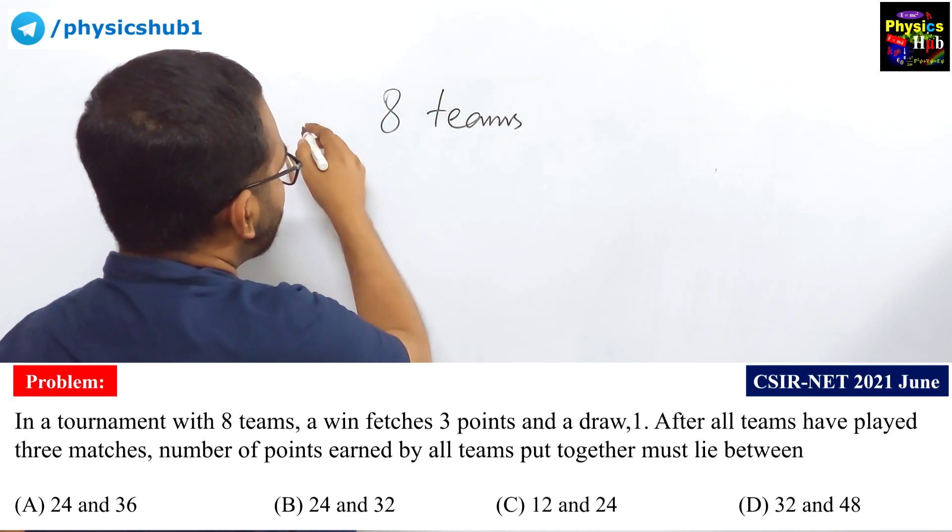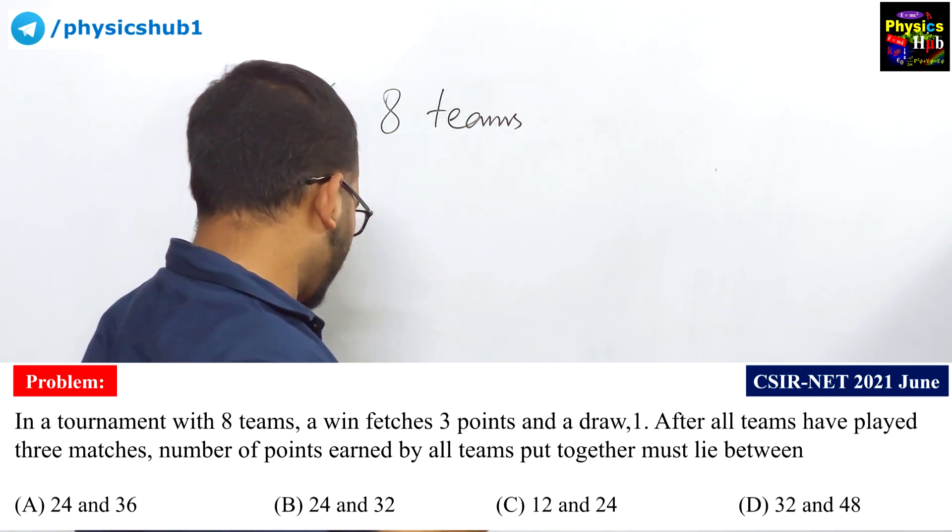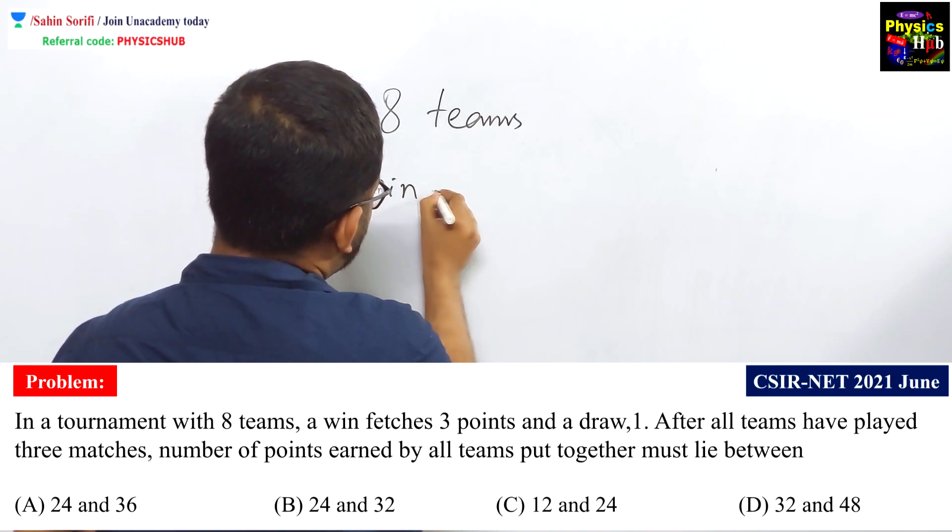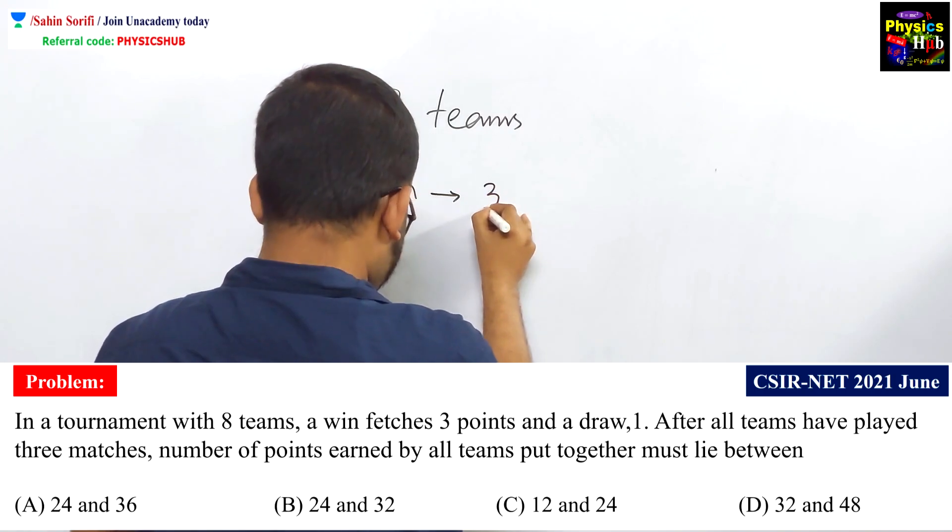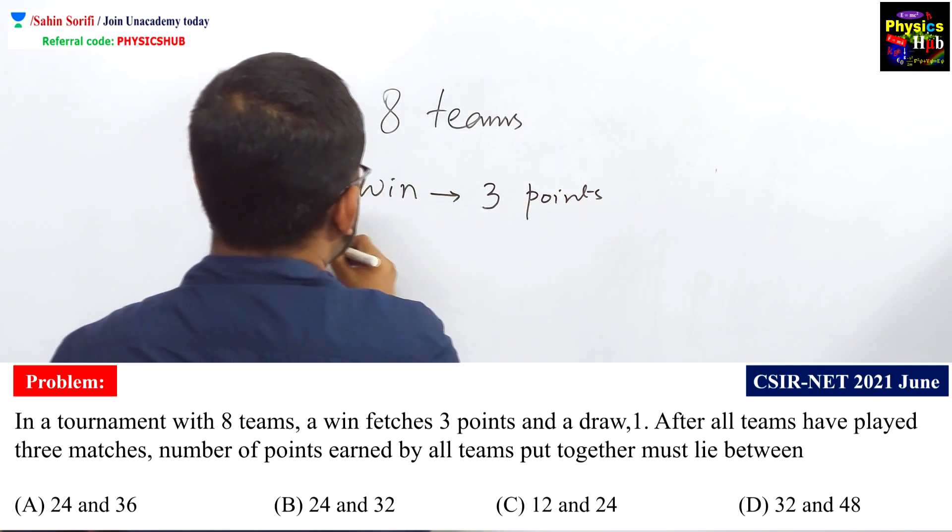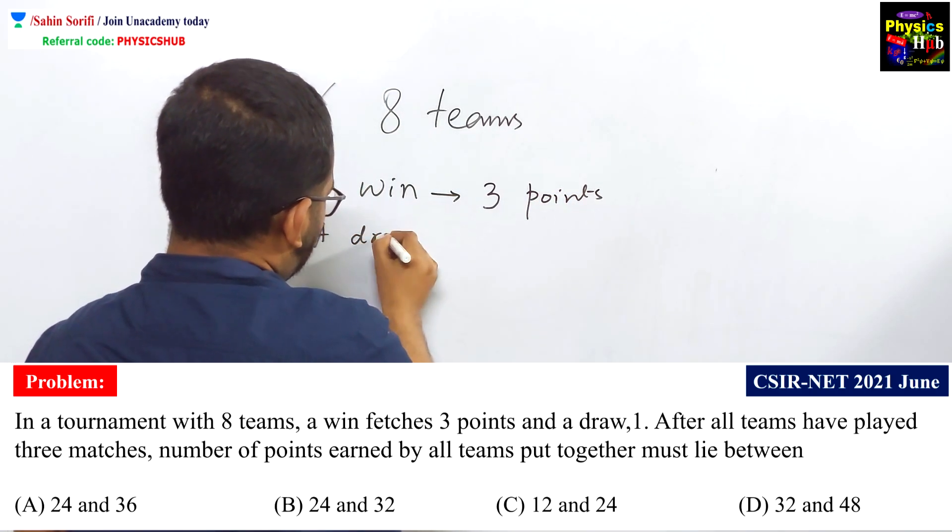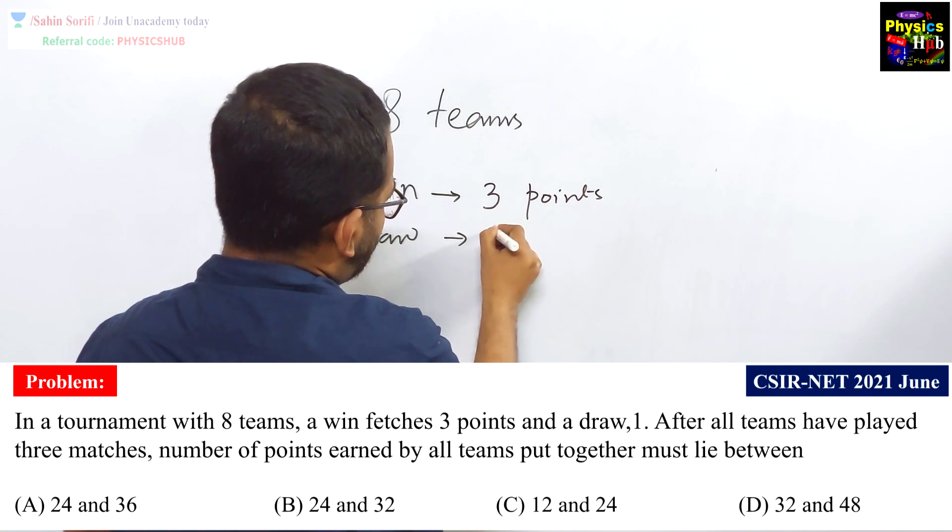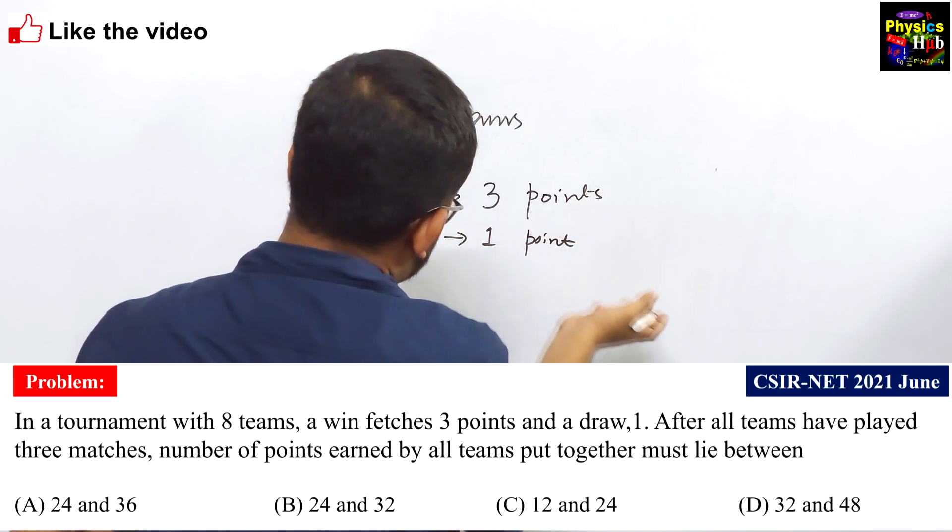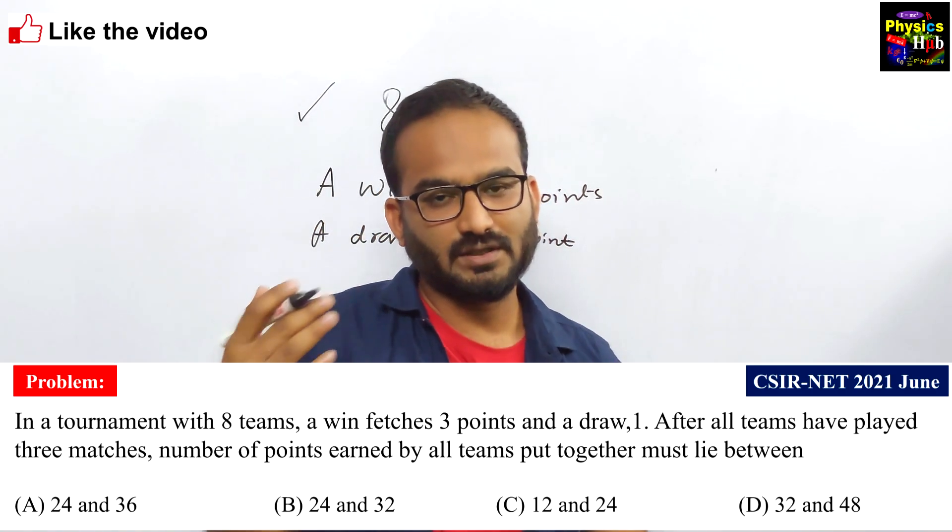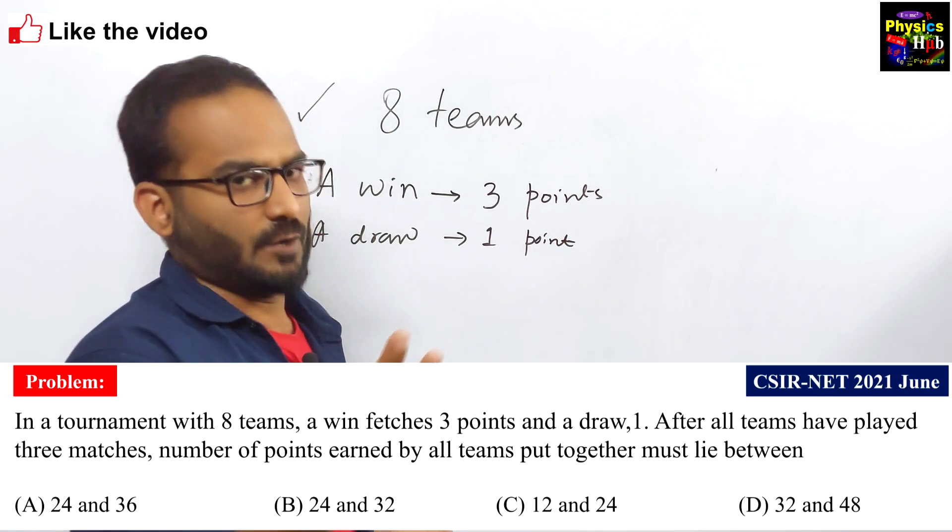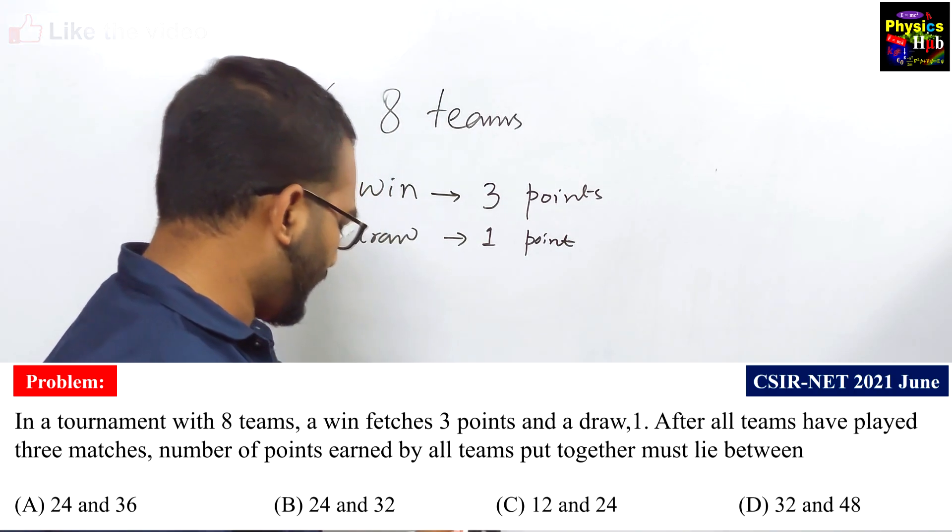So, total number of teams is 8. Now, if any team wins, that team will get 3 points. And let us say the match is draw. In that case, the teams will get 1 point each. And these are the possible scenarios. If one team wins, then another team must lose. And another possibility is it may be draw. So, these are the possibilities.